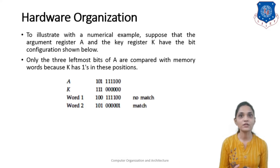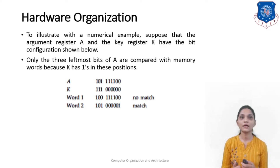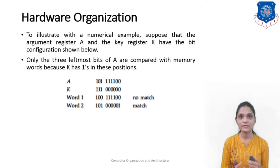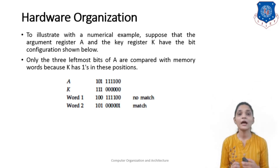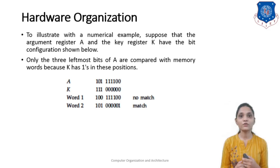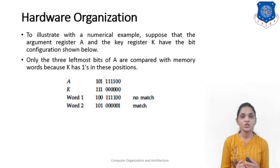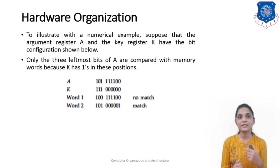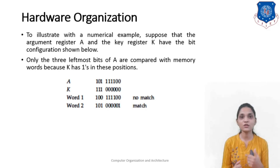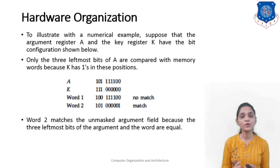For example, let the argument register A have bit configuration 101-1111-1-00 and the key register K have three ones followed by all zeros. This means only the first 3 bits of each word are compared with the argument register. Comparing with word 1, which has bits 100 — the argument is 101 — so it does not match, and the match register bit is 0. Comparing with word 2, which has bits 101 matching the argument 101, it is a match, so the match register bit is set to 1.